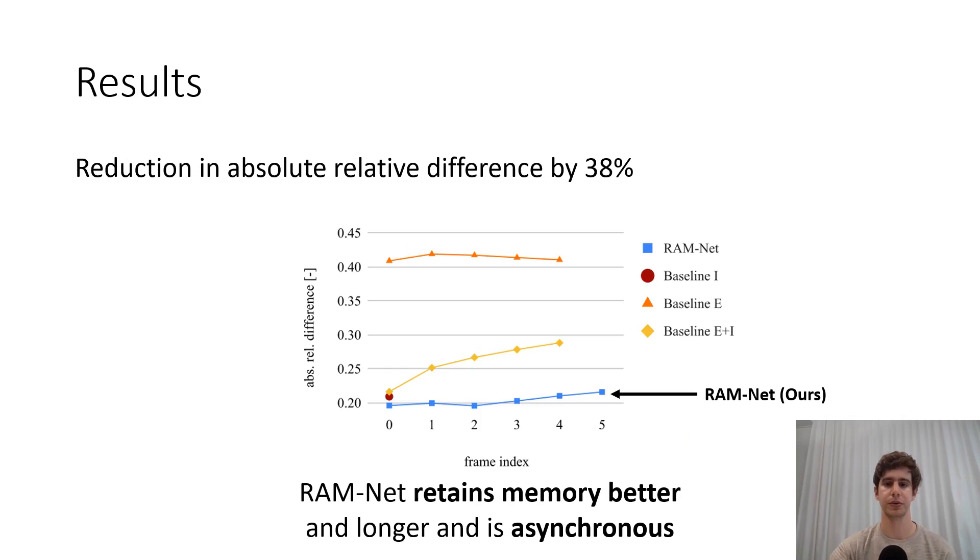We show that compared to the recurrent baselines, RAM-Net outperforms by 40% when comparing against the orange and yellow lines. It does this while retaining a high update rate as opposed to the image baseline here in dark red. It achieves this by leveraging the complementarity of both sensors while retaining a very long memory due to the events.